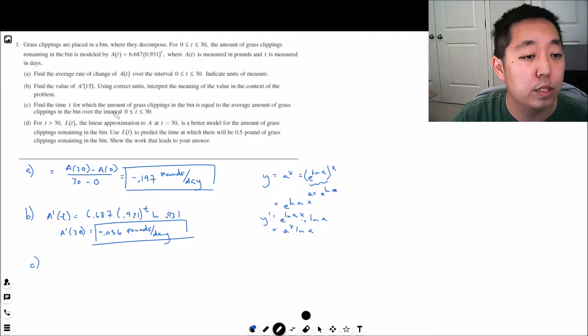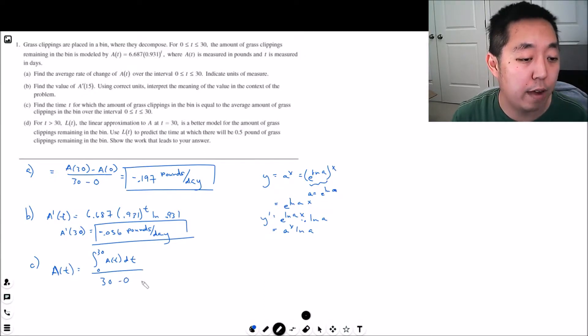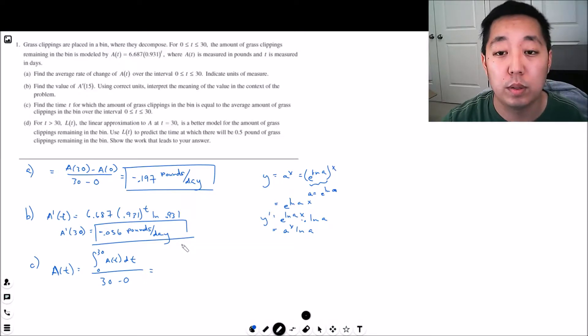Part C: Find the time for which the amount of grass clippings in the bin is equal to the average amount of grass clippings in the bin over the interval. I need two things: I need the average amount of grass clippings. So I want A(t) to be the average amount over the whole interval: integral from 0 to 30 of A(t) dt over 30 minus 0. This part of the equation is the average value and this is the instantaneous value.